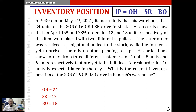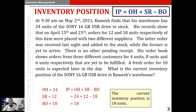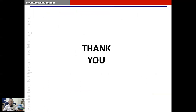Back orders are 18 units: 4 units plus 8 units plus 6 units, that is 18. Therefore, our inventory position is OH plus SR minus BO, which comes to 18 units. In this manner, in this video, we understood the meaning of the term inventory position. Thank you.